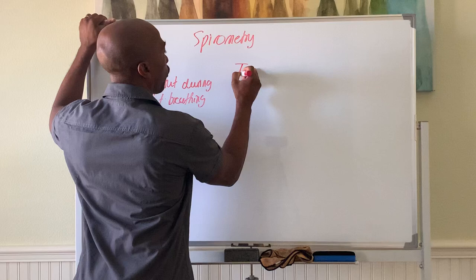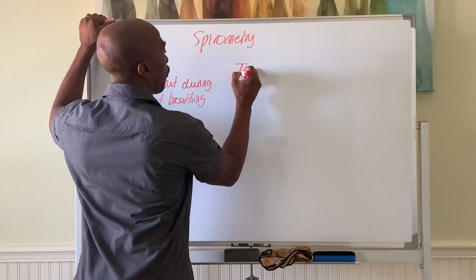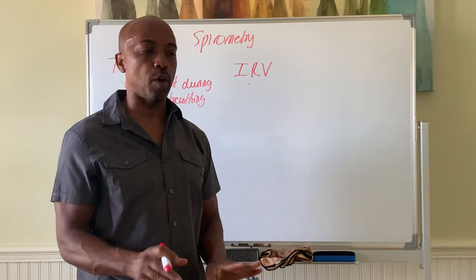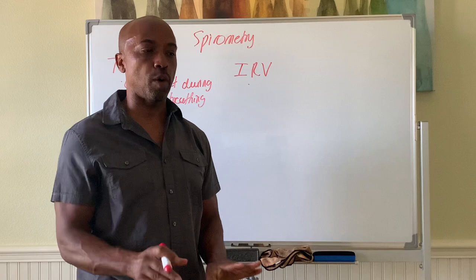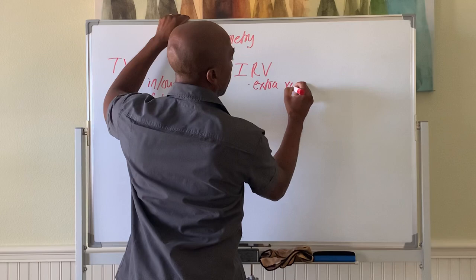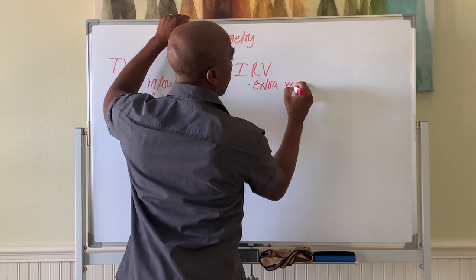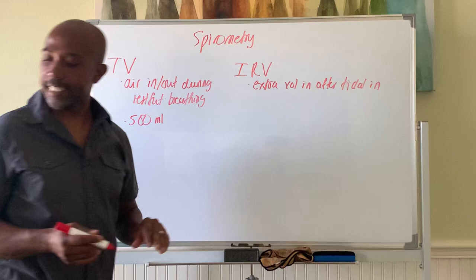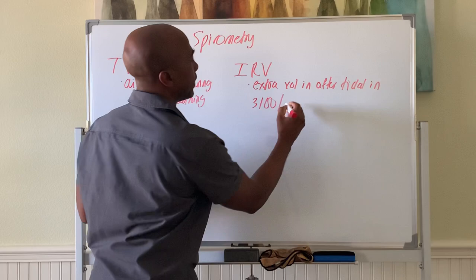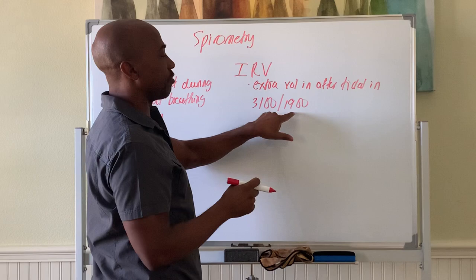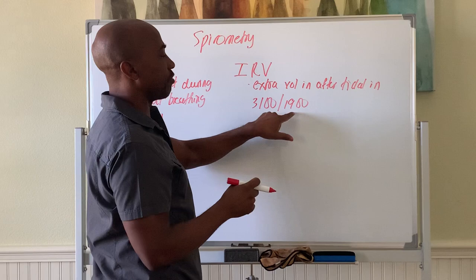There's another term called the inspiratory reserve volume, IRV. That's how much air you can bring in after you've already done a tidal inhalation. So if you do a normal quiet inhalation, the extra beyond that is called your inspiratory reserve. This is extra volume in after tidal in. That's equal to around 3,100 mLs in males and 1,900 mLs in females — that's the extra air you can bring in beyond your normal inhalation.